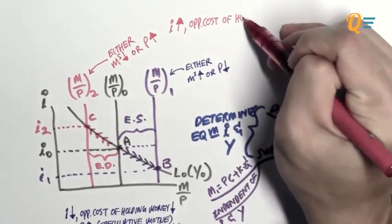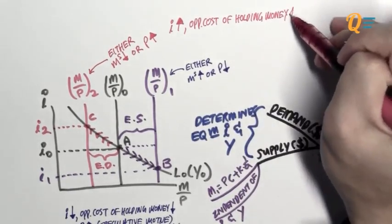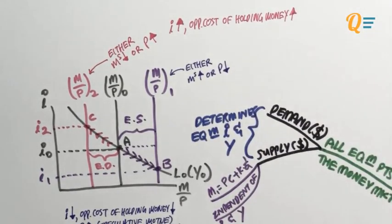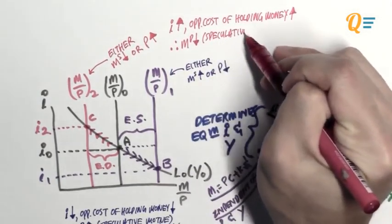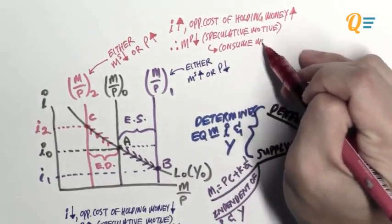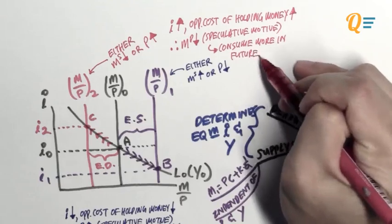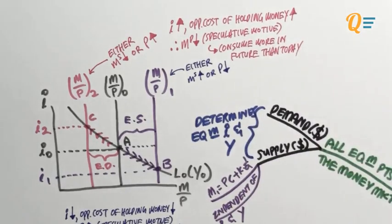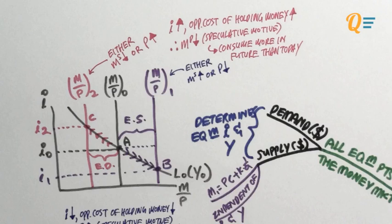The intuition is that when interest rates rise, the opportunity cost of holding money rises as well. Therefore, the demand for money is going to fall. This is the speculative motive in play — people would want to consume more in the future than today. In layman's terms, if where I'm putting my money is earning me more interest, I would just leave that money there to make more interest income so that in the future I can withdraw it and spend more.